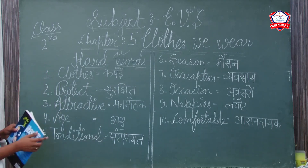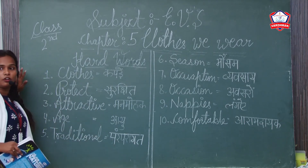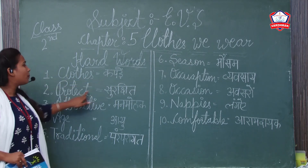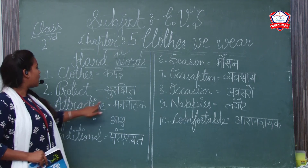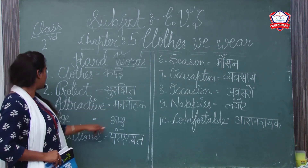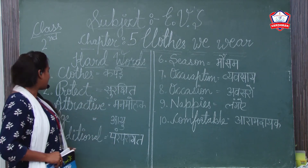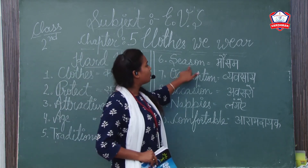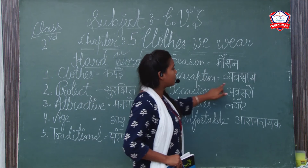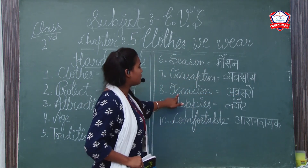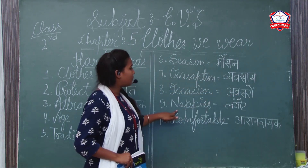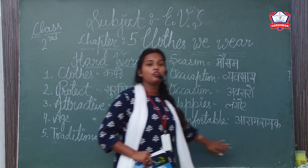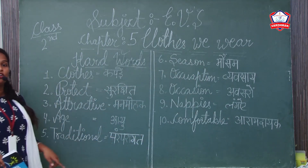Here are some hard word meanings — write these down in your notebook: Clothes — kapde. Protect — surakshit. Attractive — man mohak. Age — ayu. Traditional — paramparagrhat. Season — mausam. Occupation — vyavsay. Occasions — avsar. Nappings — langot. Comfortable — aram dayak.